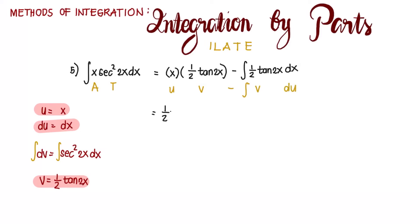Rearranging, that's 1 half x tangent of 2x minus 1 half integral of tangent of 2x dx. We know that tangent of 2x is already integrable, so we have 1 half x tangent of 2x minus 1 half integrating tangent of 2x. That's 1 half ln of secant of 2x plus c, using integration formulas. So 1 half x tangent of 2x minus 1 over 4 ln of secant of 2x plus c.